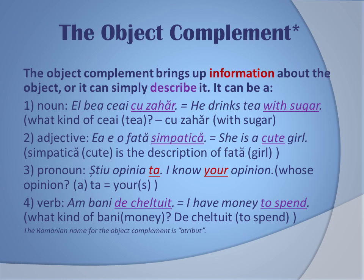Third example with a pronoun: 'știu opinia ta' — I know your opinion. Whose opinion? 'Ta' — yours. It gives a sort of identity to 'opinia', which is the object of the verb 'știu'. Fourth example with a verb: 'am bani de cheltuit' — I have money to spend. What kind of money? To spend. It gives a description of the object of the verb 'am', which means 'I have'.